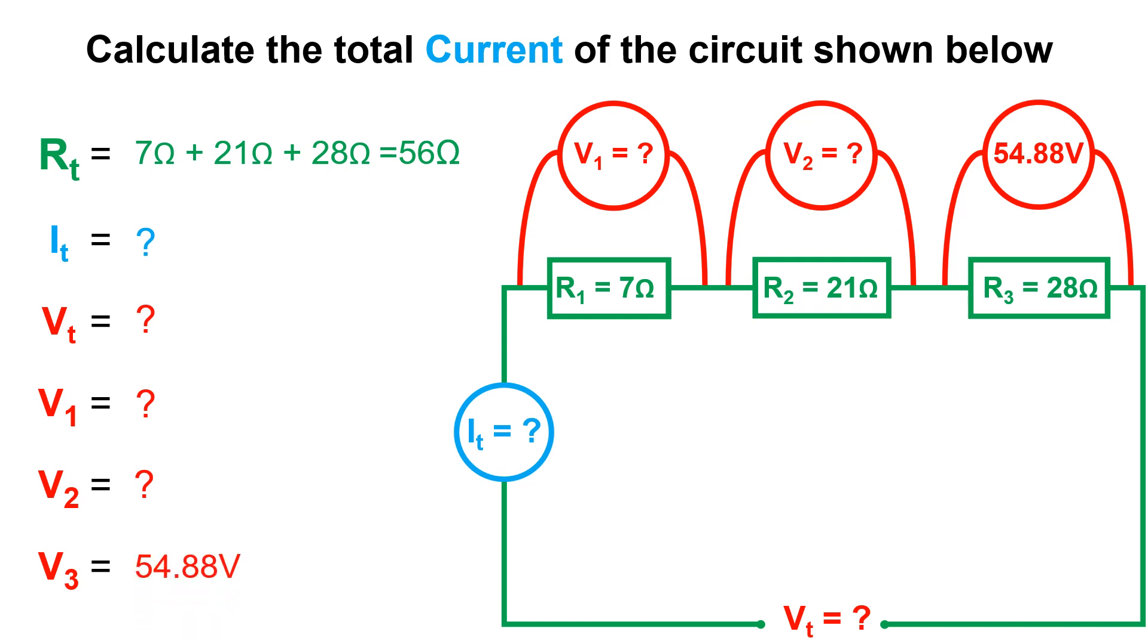You should know by now that we always need two values for the Ohm's law triangle to be able to find the third. If you look closely we may not have been given the voltage total but we have been given the voltage drop over resistor 3 which is 54.88 volts. Using the Ohm's law triangle for voltage drop 3 over resistance 3 we can still find the current total within the circuit which is the key to unlocking the rest of the question.